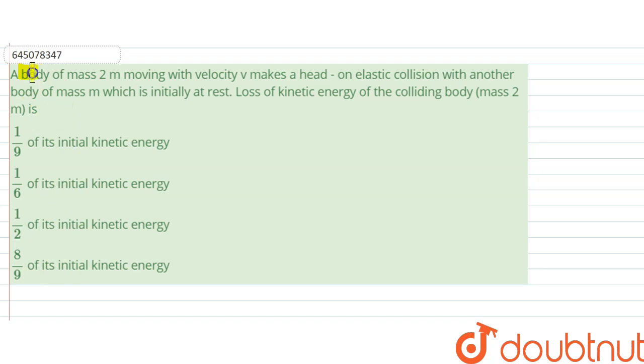The question says: A body of mass 2m moving with velocity v makes a head-on elastic collision with another body of mass m which is initially at rest. Loss of kinetic energy of the colliding body is what?